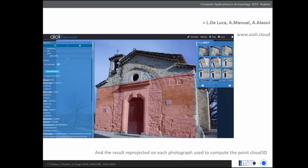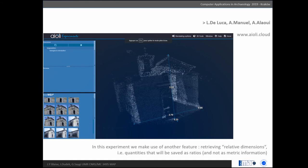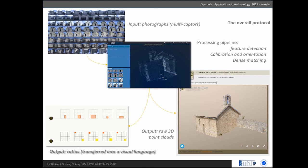But we used another feature in this experiment: retrieving relative dimensions, quantities that will be saved as ratios—not absolute dimensions, but relative ones before the scaling of the 3D model. The protocol looks like this: the input is photographs using various captors. The processing pipeline is classic: feature detection, calibration, then dense matching. What we do with the results are two things: publish the 3D point cloud and use ratios that we've gathered, transferring them into an abstract visual language.